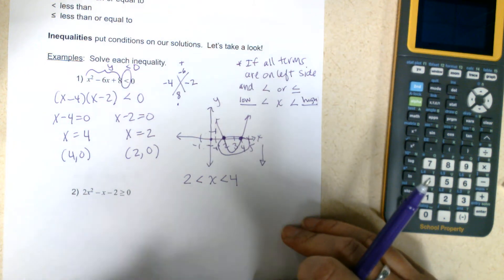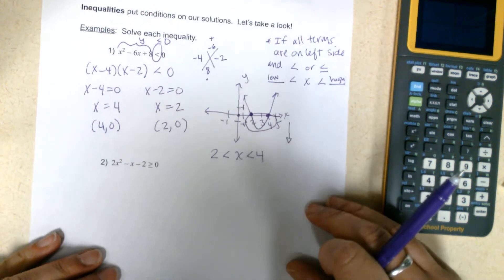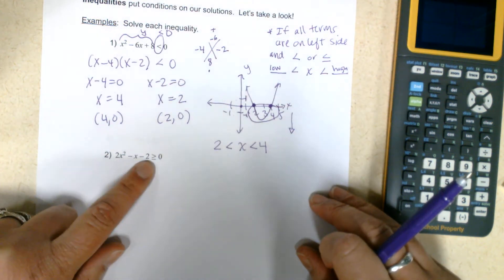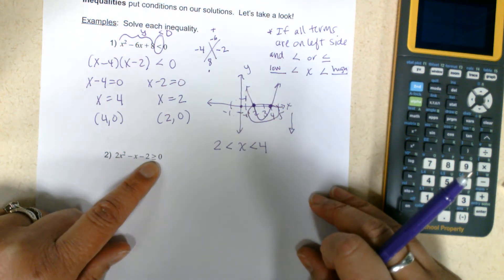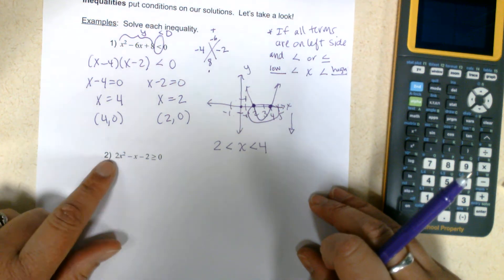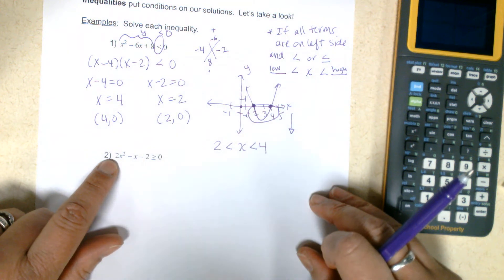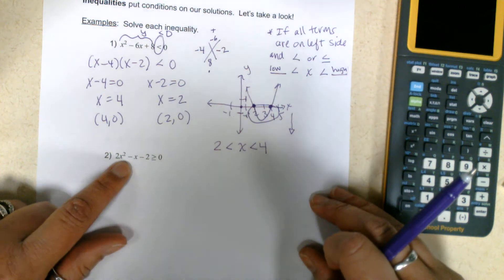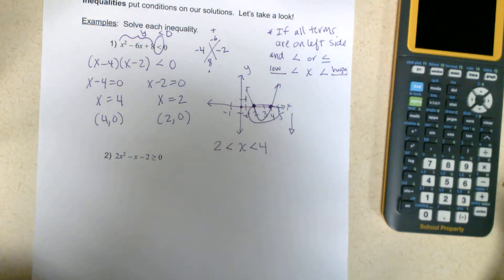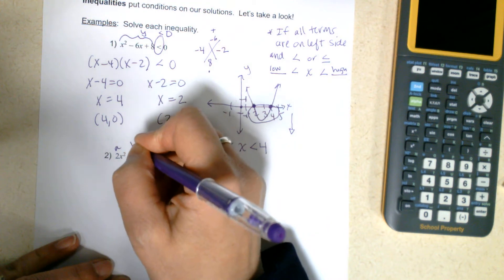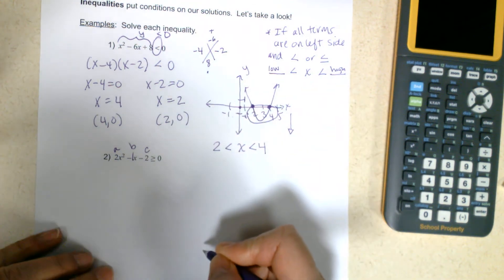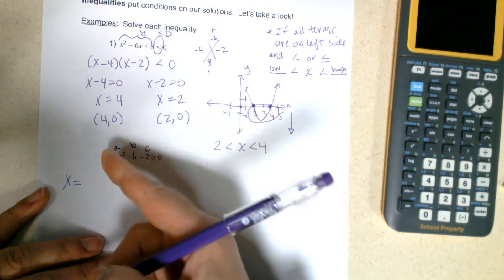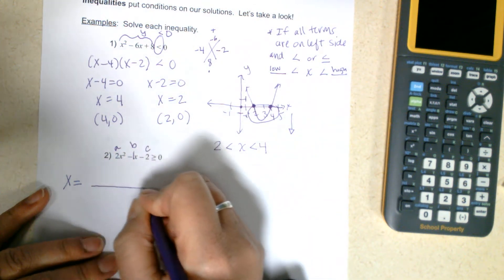So what happens if we have a greater than or greater than or equal to? Let's look at this next example. All the terms are on the left side and we have an inequality symbol of greater than or equal to. I'm noticing that my a value here is not 1, it's 2. Once I see two x squared, what I'm going to do is just use the quadratic formula, so I don't have to worry about factoring.